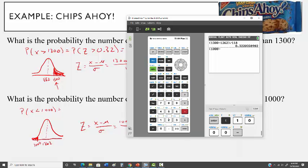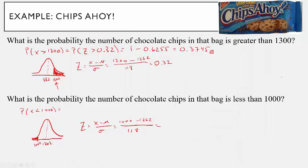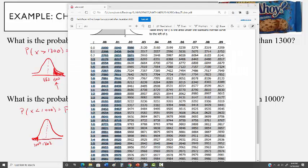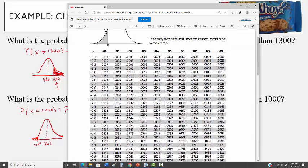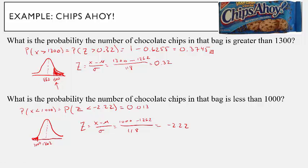Computing 1,000 minus 1,262 divided by 118 gives minus 2.22. This becomes P(Z < −2.22), which is a left-tail area you can read directly off the table. Looking it up: the probability is 0.0132. Since there is a nonzero chance it could happen, their claim is not correct. Another way to say this is that roughly 1.32% of bags have less than 1,000 chips — and that's why this ad campaign is no longer used. They actually got caught.